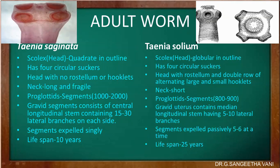In the case of the Taenia solium adult worm, the head portion is globular in outline and has four circular suckers. The head has a rostellum and two rows of alternating large and small hooklets. The neck is very short. The proglottid segments number 800 to 900. The gravid uterus in T. solium has a median longitudinal stem with five to ten lateral branches. The segments are expelled passively, five to six at a time, and the lifespan is about 25 years.